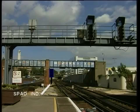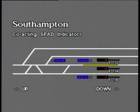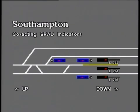At certain locations, such as Southampton, additional SPAD indicators will be provided to give warning to drivers of trains on opposite or adjacent lines, or on the same line in the opposite direction, that a signal has been passed at danger. This has the additional safeguard of alerting a driver to the possibility of collision resulting from another train passing a signal at danger.